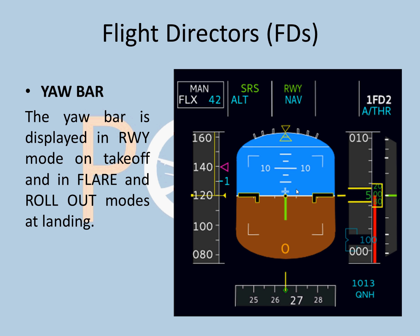The last FD element is the yaw bar. The yaw bar is displayed in runway mode on takeoff and in flare and rollout modes during landing. It gives you the runway centerline — there is no FD bar and no Track/FPA; if you are landing, this yaw bar comes up. The runway needs to have an ILS signal for this to work, and you maintain the runway centerline using the yaw bar.